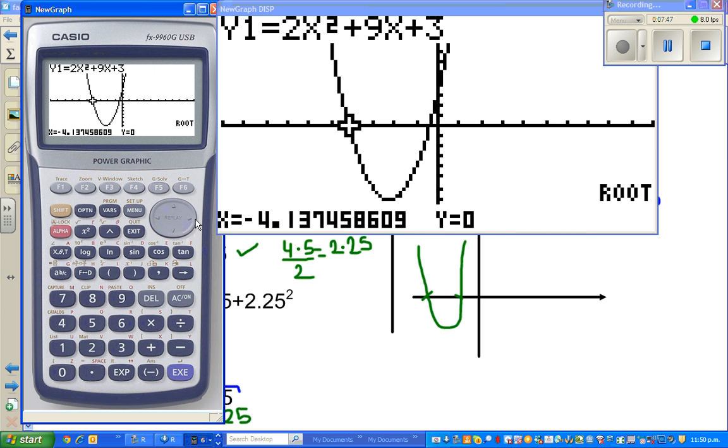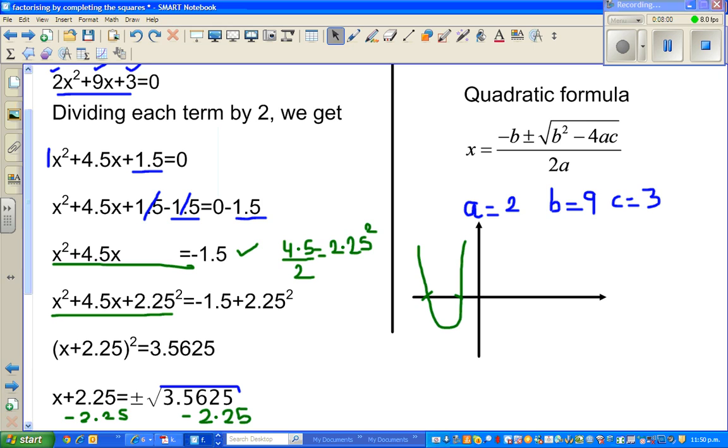How do you check that? G-solve and press root. This is -4.14, and if you press replay, -0.36. These are the two roots. There are two different ways you can check your answer. Hopefully this video has been helpful. Thank you very much.